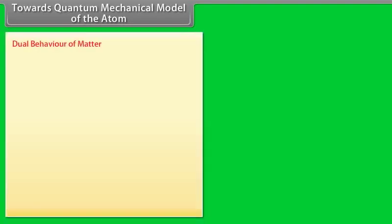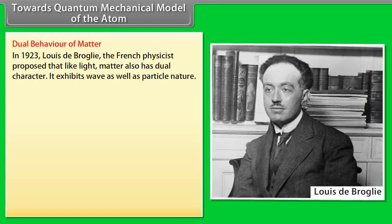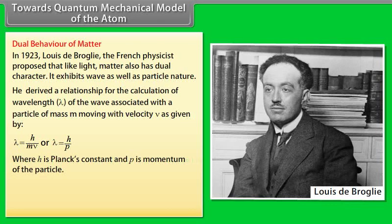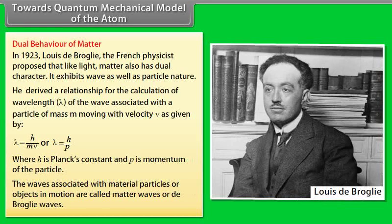Towards the quantum mechanical model of the atom — Dual behavior of matter. In 1923, Louis de Broglie, the French physicist, proposed that like light, matter also has dual character. It exhibits wave as well as particle nature. He derived a relationship for the calculation of wavelength lambda of the wave associated with a particle of mass M moving with velocity V, given by lambda = h/mv, or lambda = h/p, where h is Planck's constant and p is the momentum of the particle.